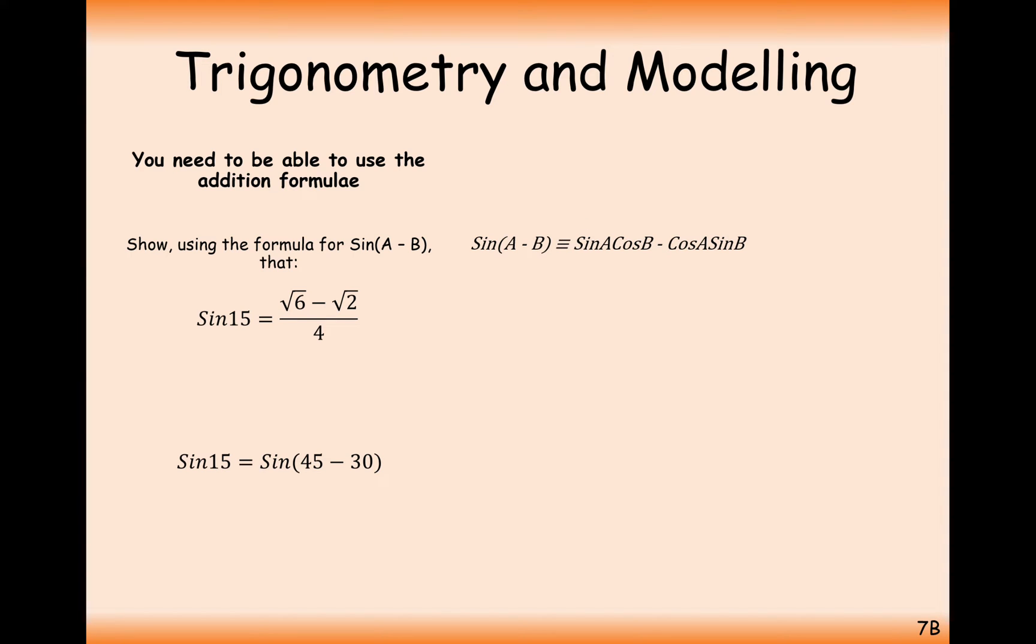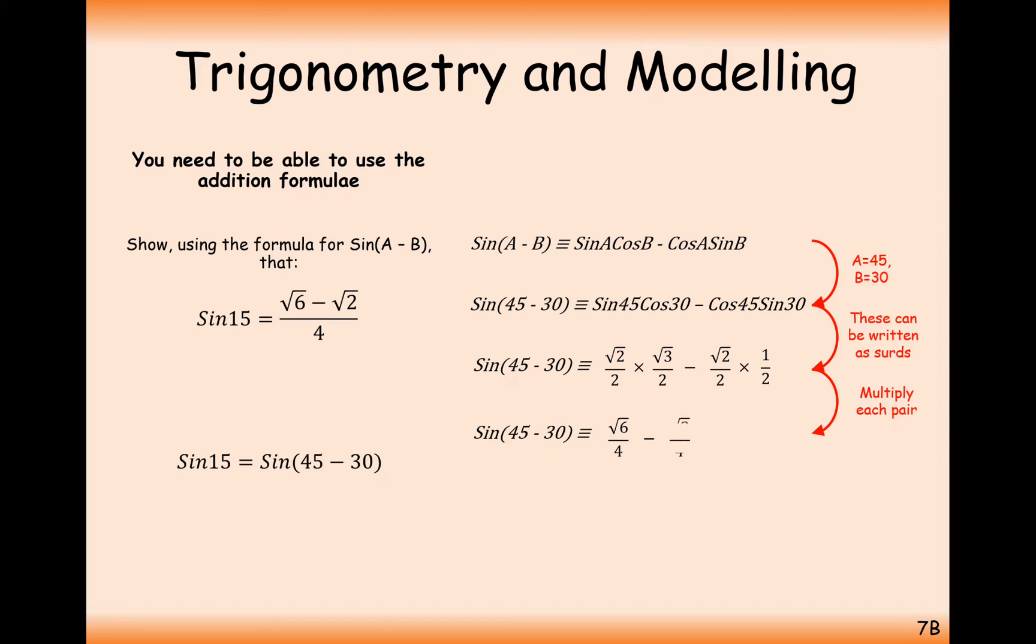Here we've got A equals 45, B equals 30 and let's just plug in the values. And calculating the exact angle values from memory if you can remember that. We get square root of 6 over 4 minus square root of 2 over 4. We've got common denominator fractions here so we can subtract one from the other. In this case we get square root of 6 minus square root of 2 all over 4 which was our answer.